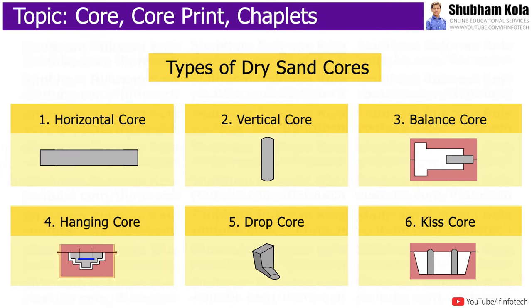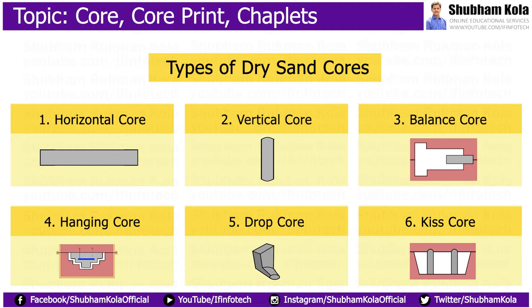Some common types of dry sand cores are: horizontal core, vertical core, balance core, hanging core, drop core, and kiss core.